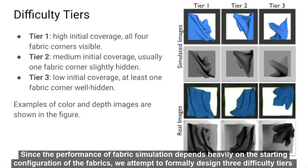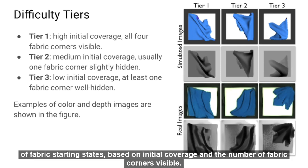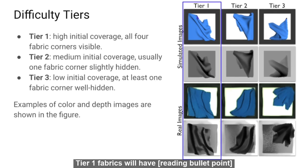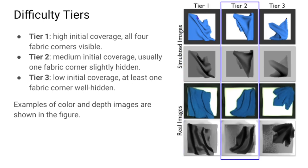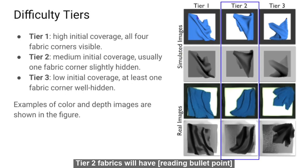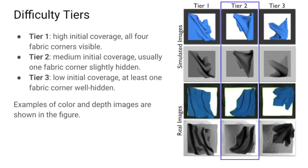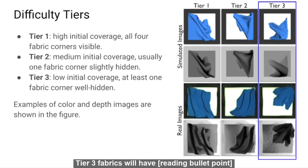Since the performance of fabric simulation depends heavily on the starting configuration of the fabric, we formally designed three difficulty tiers of fabric starting state based on initial coverage and the number of fabric corners visible. Tier 1 fabrics have high initial coverage and all four fabric corners visible. Tier 2 fabrics have medium initial coverage and usually one fabric corner slightly hidden. Tier 3 fabrics have low initial coverage and at least one fabric corner well hidden.